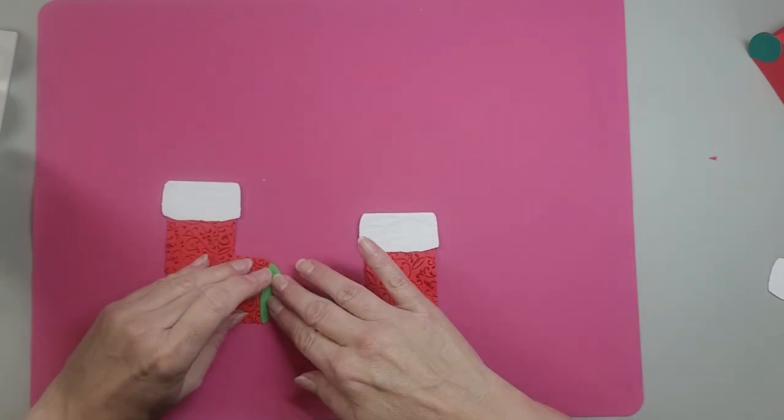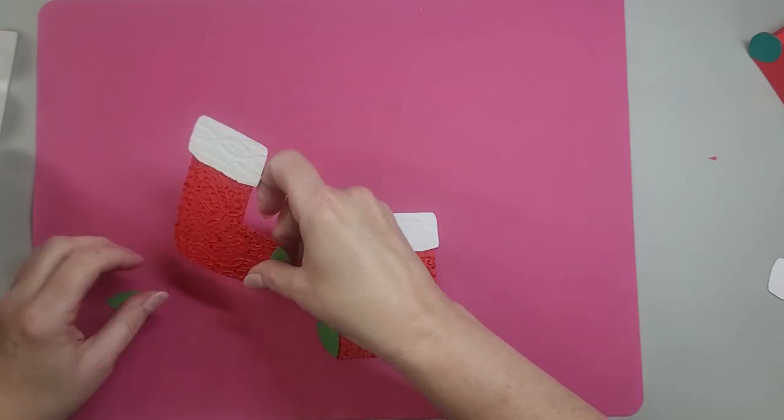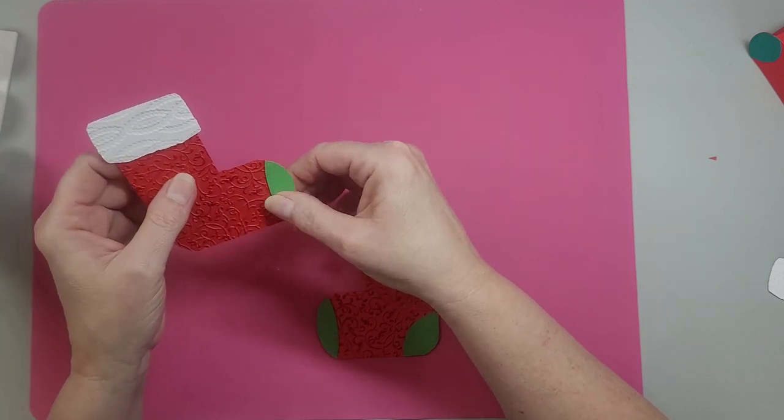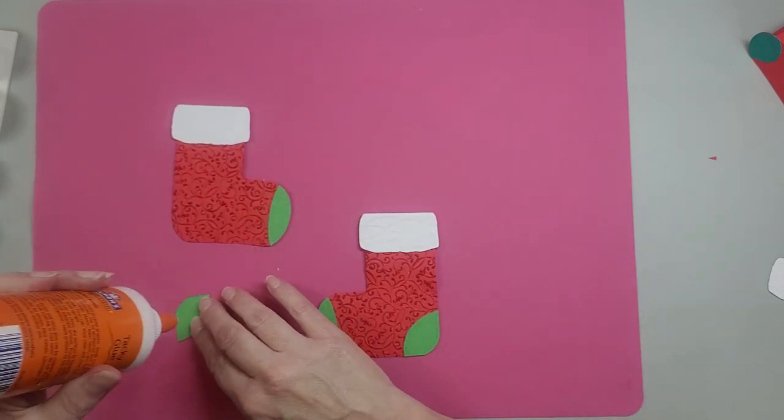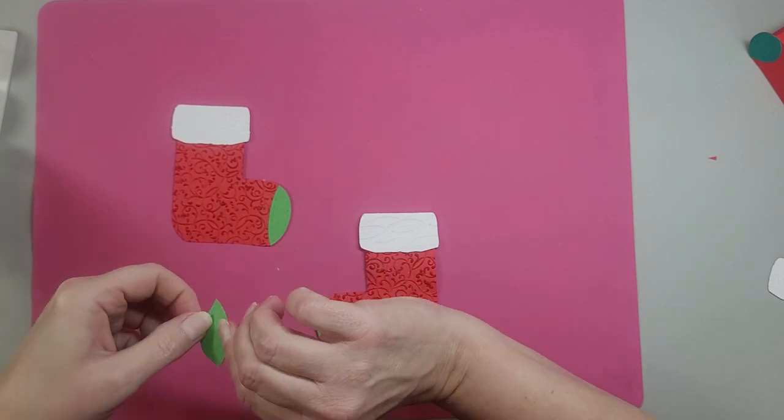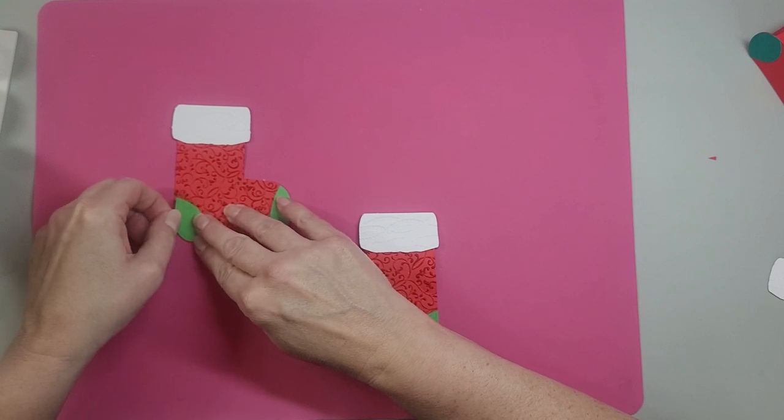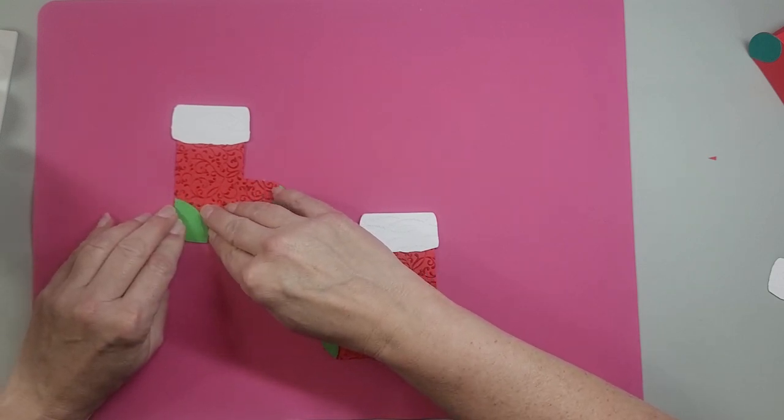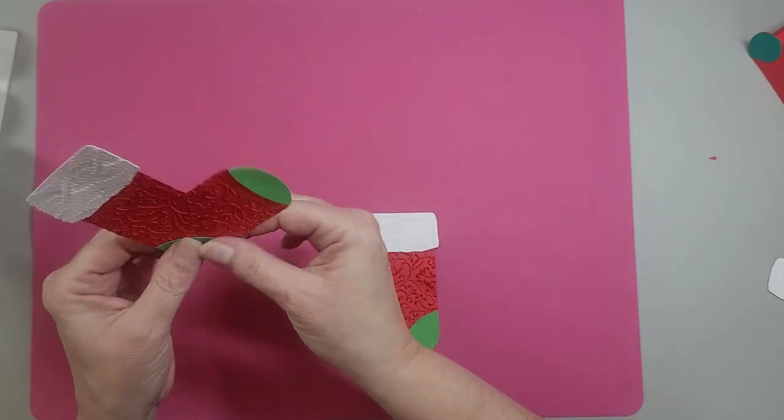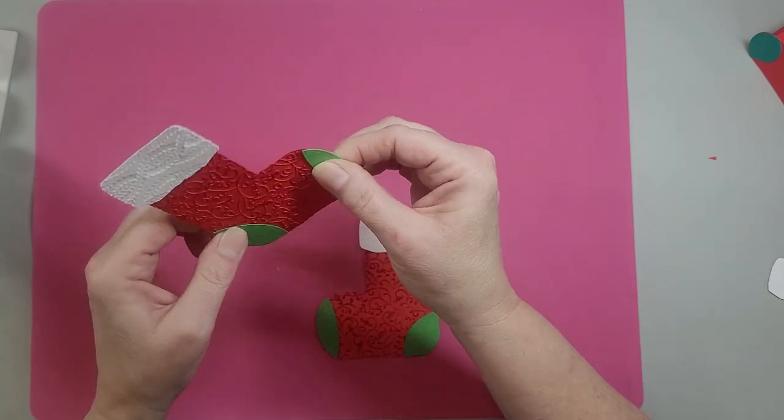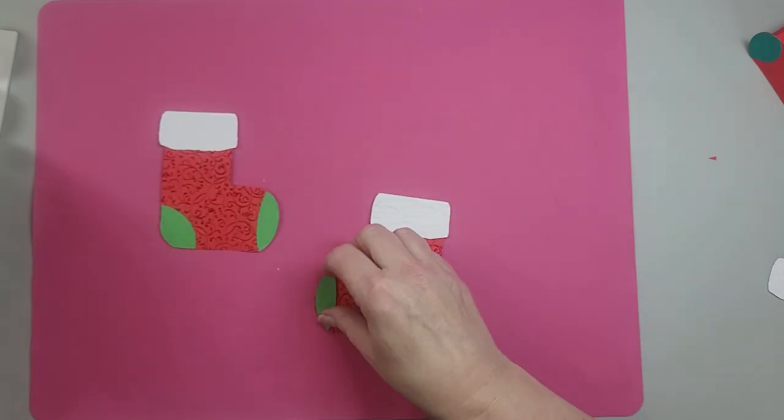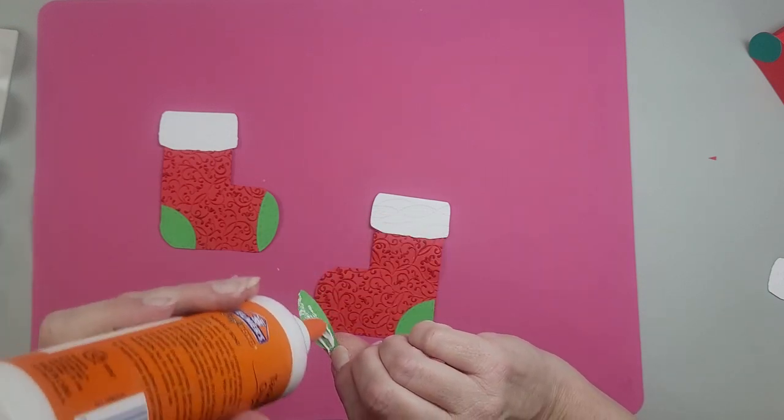All right. The toe will go on here. Another thing you could do is you could glue these pieces on first and then run it through an embossing folder. And then the pattern would be exactly the same on both pieces. And I wouldn't put the stocking piece on. I'd put that on separate, but you absolutely could put the toes and the heels on first.